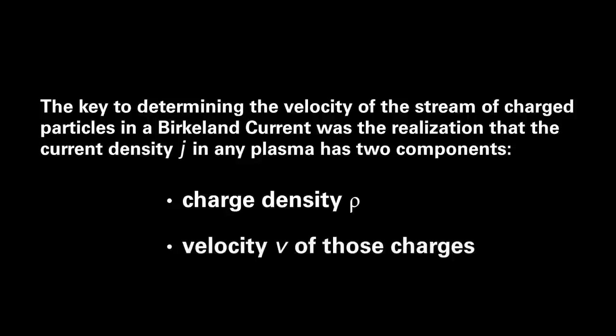The key to determining the velocity of the stream of charged particles in a Birkeland current was the realization that the current density in any plasma has two components: the charge density and the velocity of those charges.